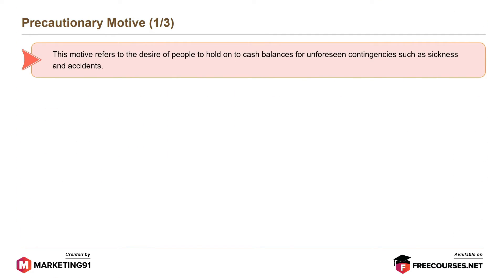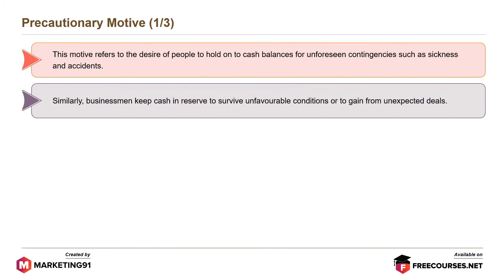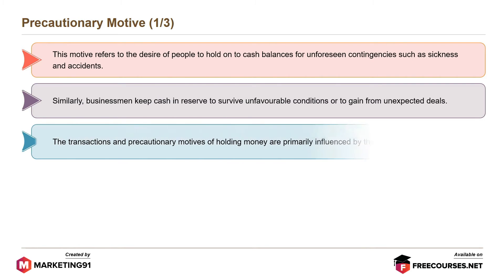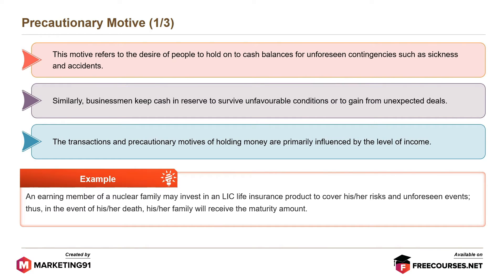Precautionary motive refers to the desire of people to hold on to cash balances for unforeseen contingencies, such as sickness and accidents. Similarly, businessmen keep cash in reserve to survive unfavorable conditions or to gain from unexpected deals. The transactions and precautionary motives of holding money are primarily influenced by level of income. For example, an earning member of a nuclear family may invest in an LIC life insurance product to cover risks and unforeseen events, so that in the event of death, the family will receive the maturity amount.